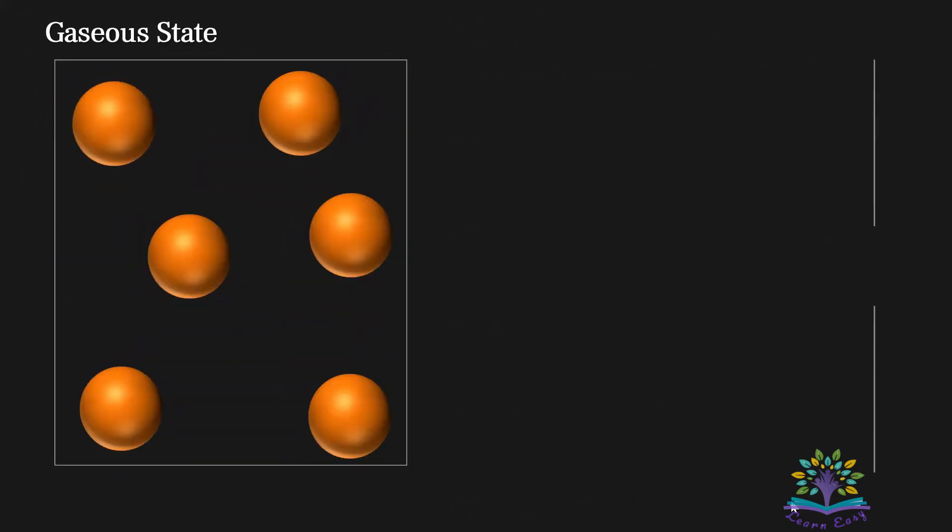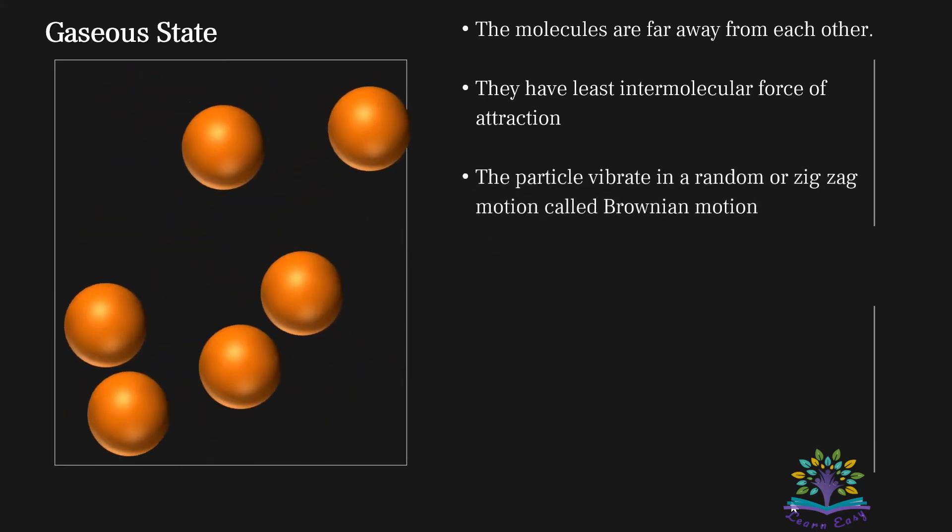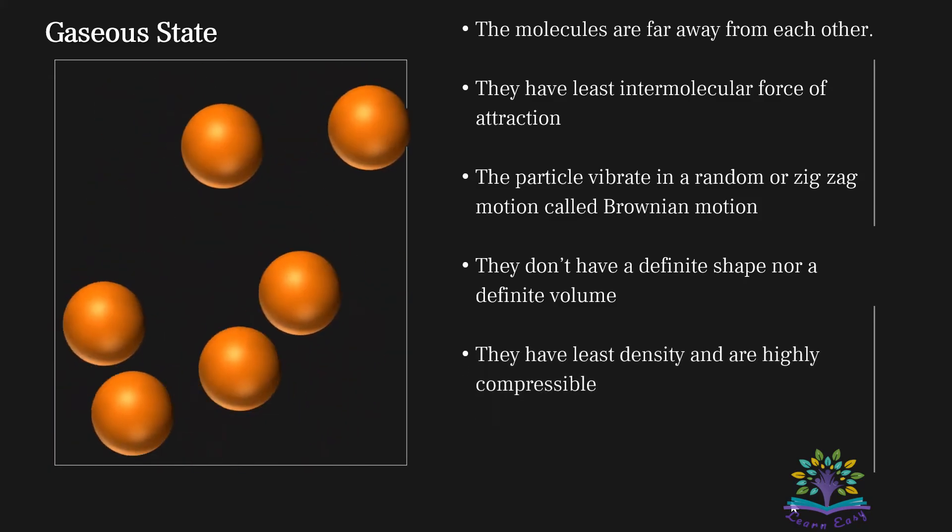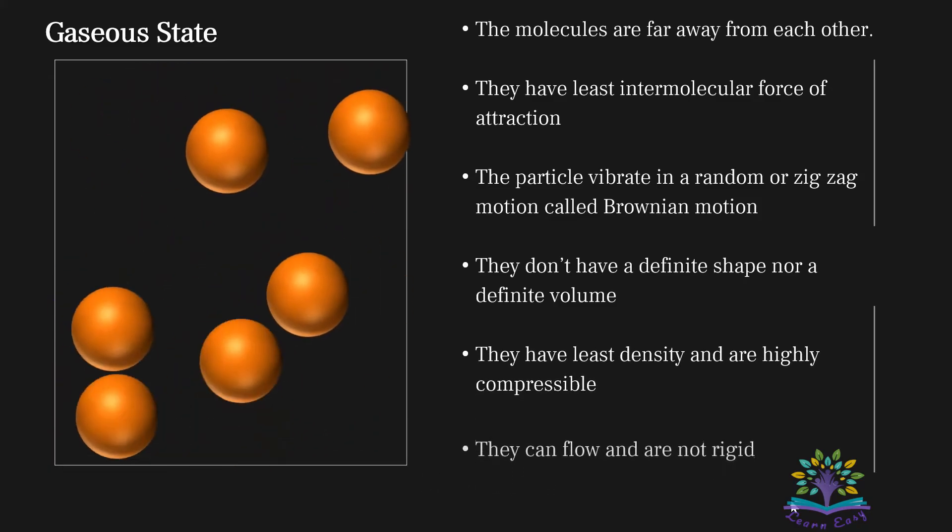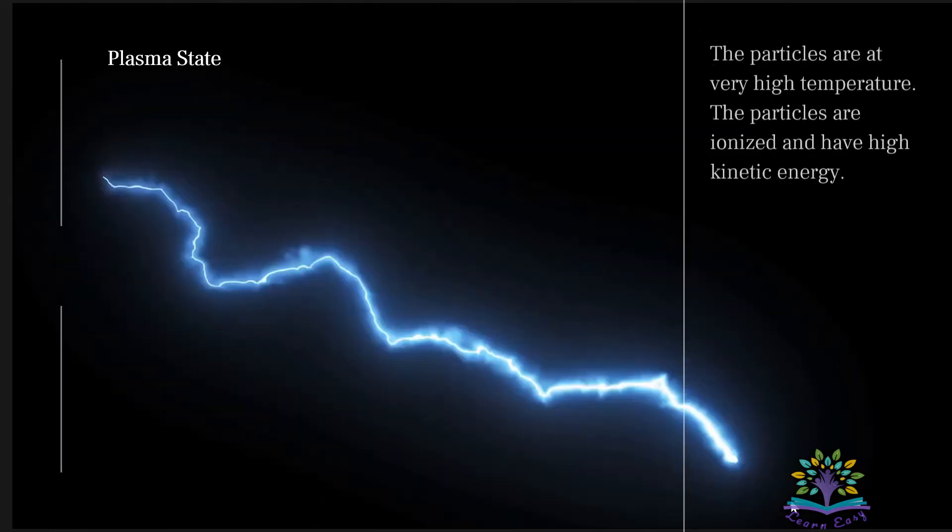Gaseous state: The molecules are far away from each other. They have least intermolecular force of attraction. The particles vibrate in a random or zigzag motion called Brownian motion. They don't have a definite shape nor a definite volume. They have least density and are highly compressible. They can flow and are not rigid.